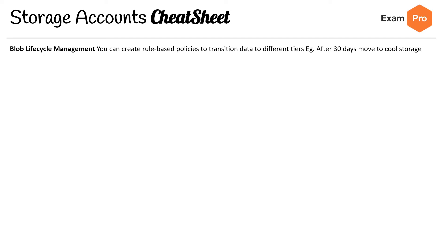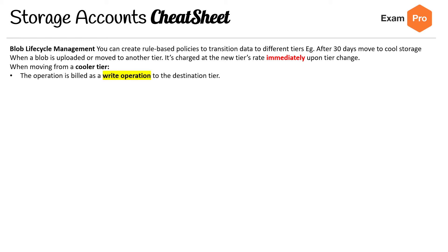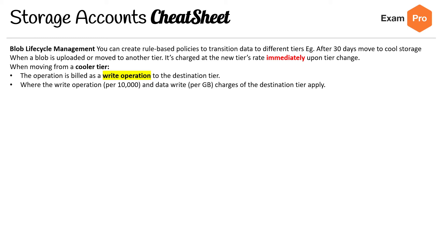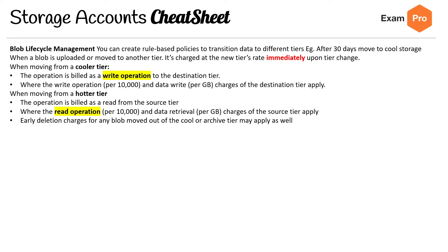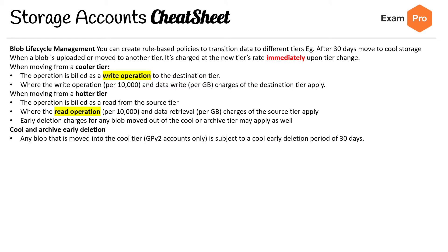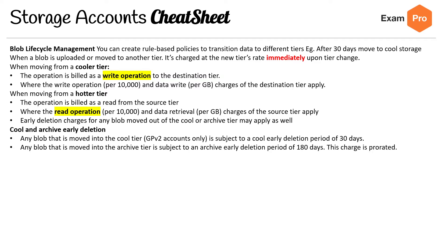For blob lifecycle management, you can create rule-based policies to transition data to different tiers — for example, after 30 days it moves to cool storage. When a blob is uploaded or moved to another tier, it's charged at the new tier's rate immediately. When moving from a cooler tier, the operation is billed as a write operation to the destination tier, at a rate per 10,000 operations and data writes per gigabyte. When moving to a hotter tier, the operation is billed as a read from the source tier. Early deletion charges may apply for blobs moved out of cool or archive tiers. Any blob moved into the cool tier on GPv2 is subject to a 30-day early deletion period; any blob moved into archive is subject to a 180-day early deletion period. This charge is pro-rated.